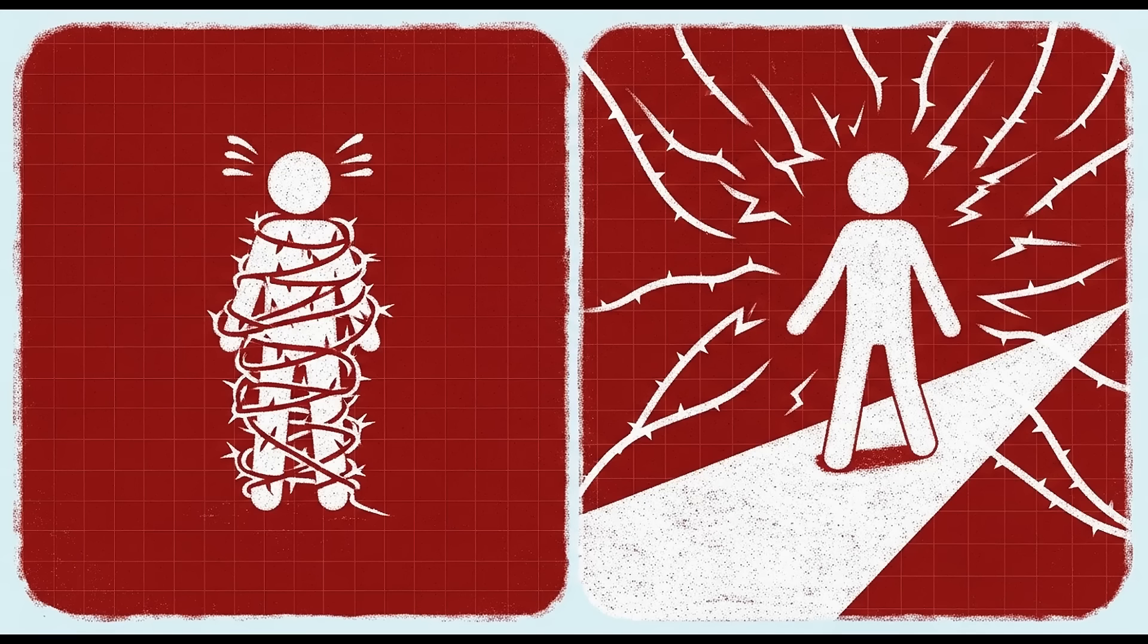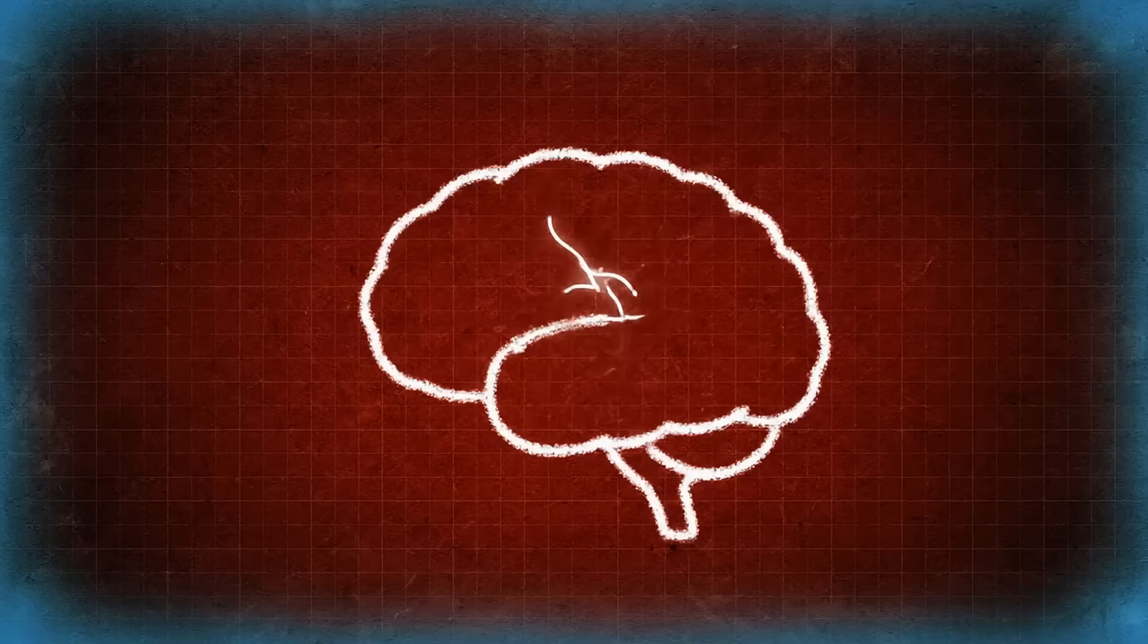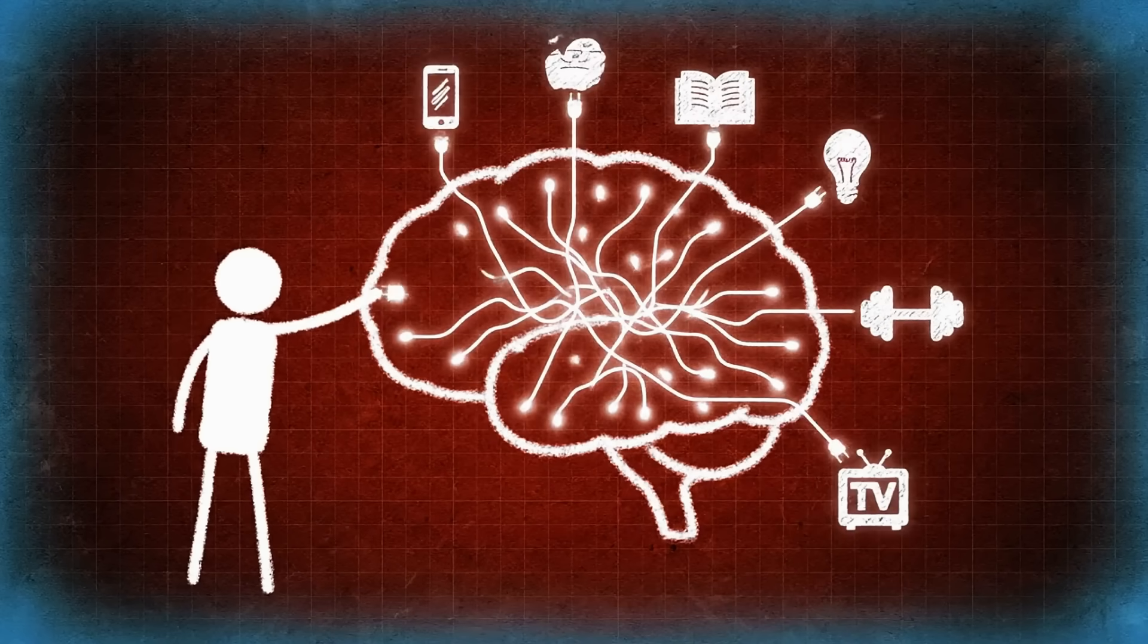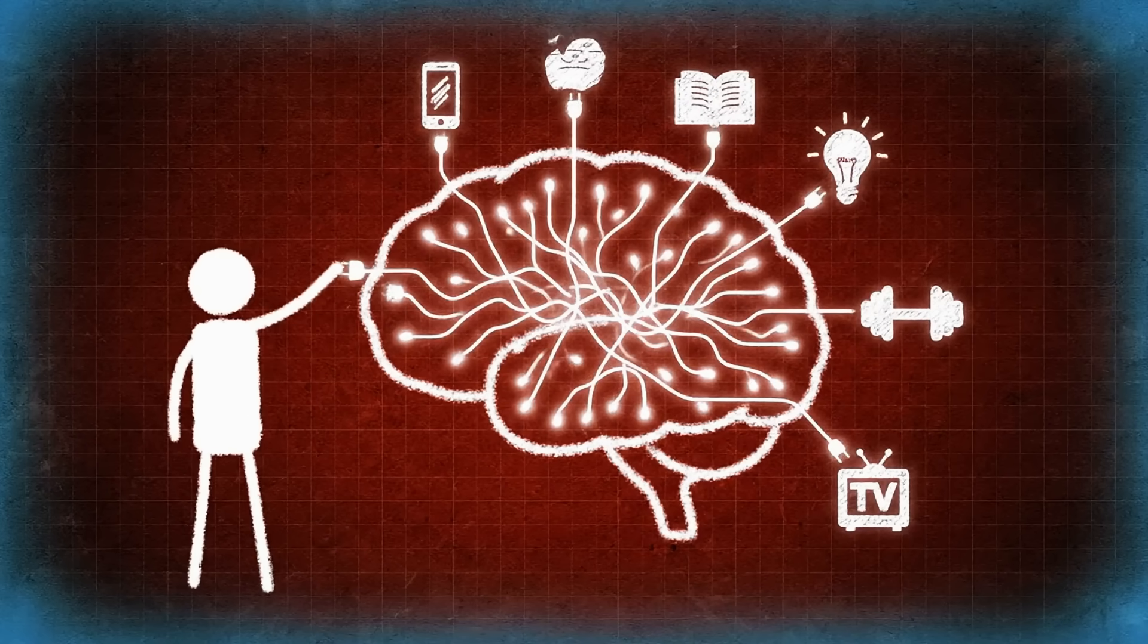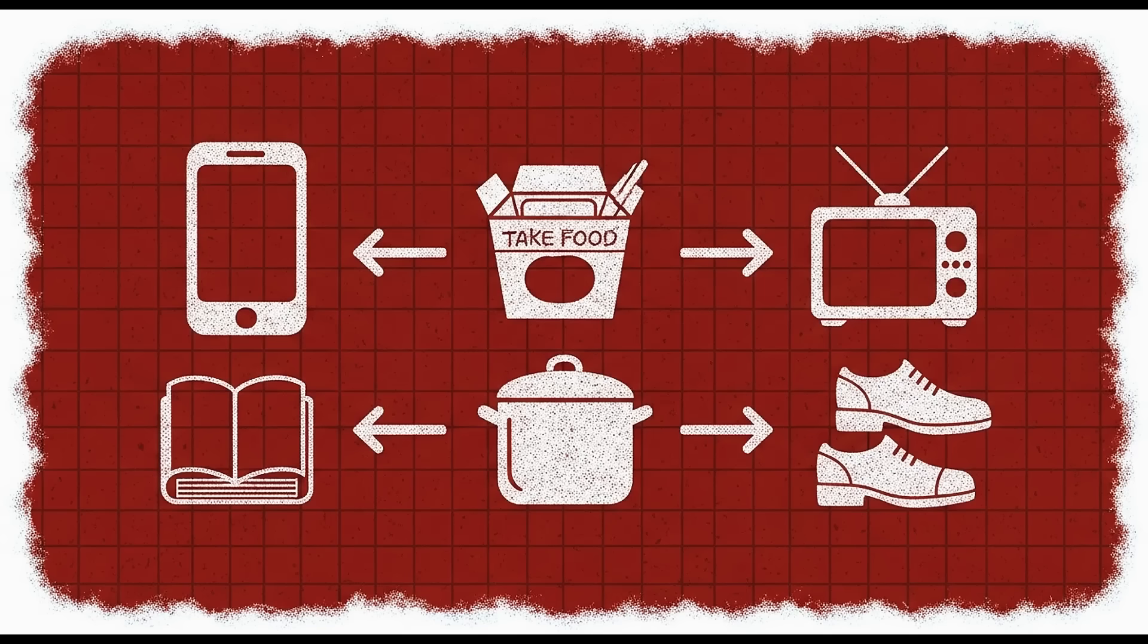So here's what I want you to do. Don't just watch this video and move on. That's what the old version of you would do. Instead, make one concrete decision right now. What's the single highest source of empty dopamine in your life? Identify it. Then commit to removing it for the next seven days.